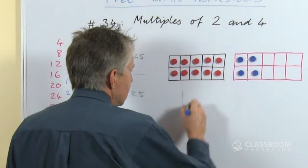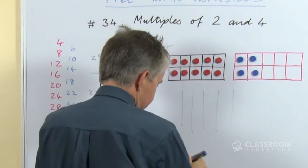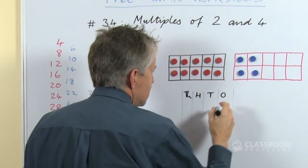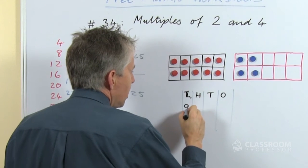So again if we have, let's put some columns here, if we have thousands and hundreds and tens and ones, we could have...